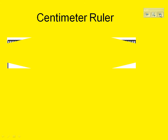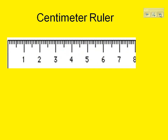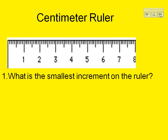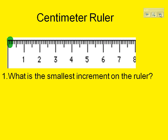Let's look at the centimeter ruler again. What is the smallest increment on the ruler? By increment, I mean graduations between the smallest lines. You might say 1 millimeter. You might say 0.1 centimeter. Those are equivalent amounts — they're both right.